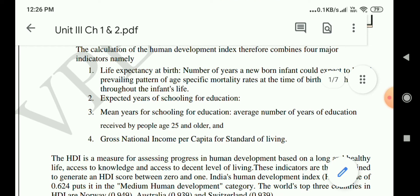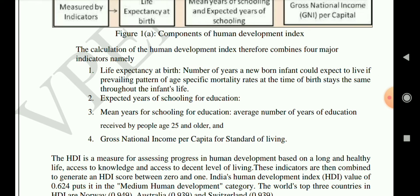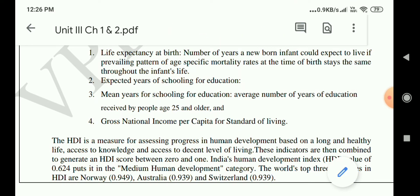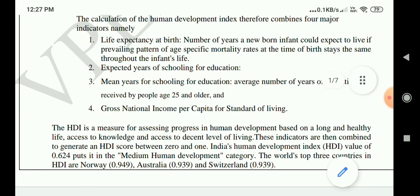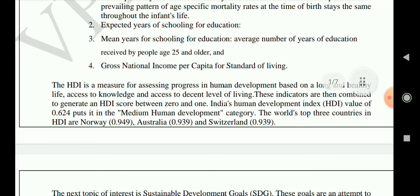Second is expected years of schooling for education — how many years the student studies and its average is calculated. Third is mean years of schooling for education — the average number of years people study and complete their education. Fourth is gross national income per capita for standard of living.